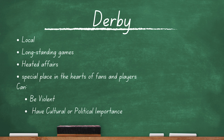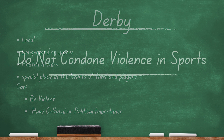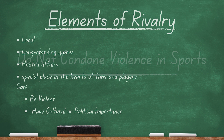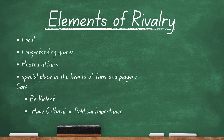Some derbies are known to go beyond the sport with references to wider cultural and political issues. I want to make clear I'm not condoning violence in any way, and for the most part, a lot of the violence has been cleaned up over the years. But this is an aspect of rivalries we see even here in the United States. It can make a case that a rivalry exists if there's a noticeable or historical pattern between the fan bases. To recap, here are your elements: generally local teams, longstanding games, special place in fans' and players' minds, heated affair — can be violent but not required — and may have cultural or political implications beyond the sport, also not required.